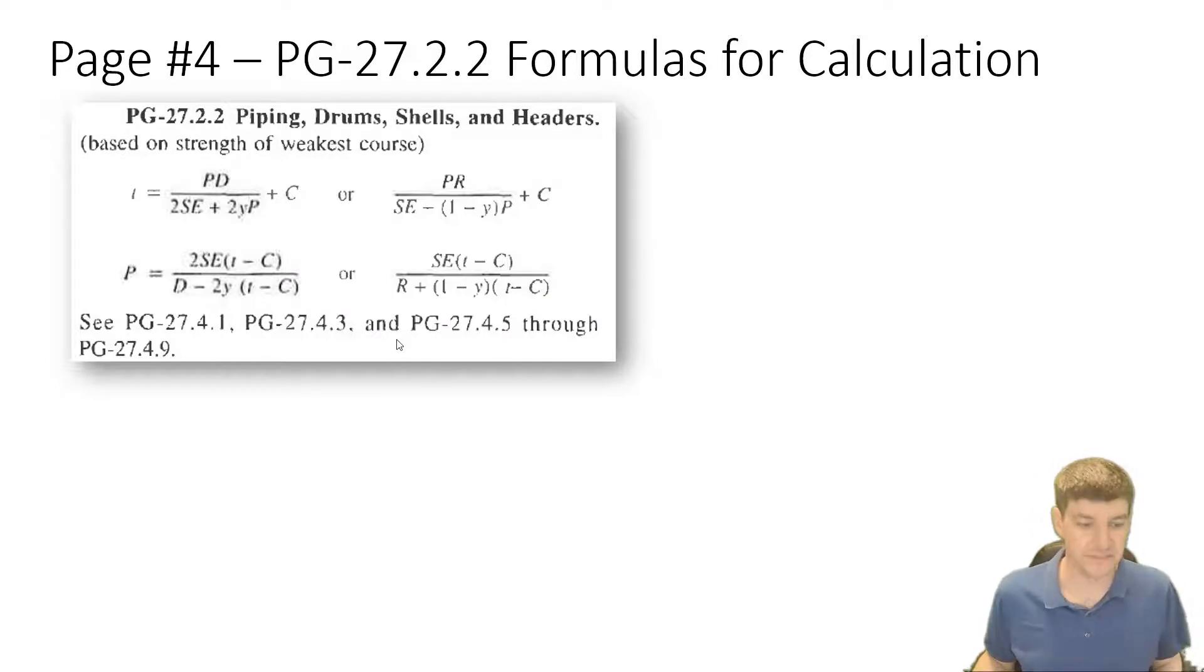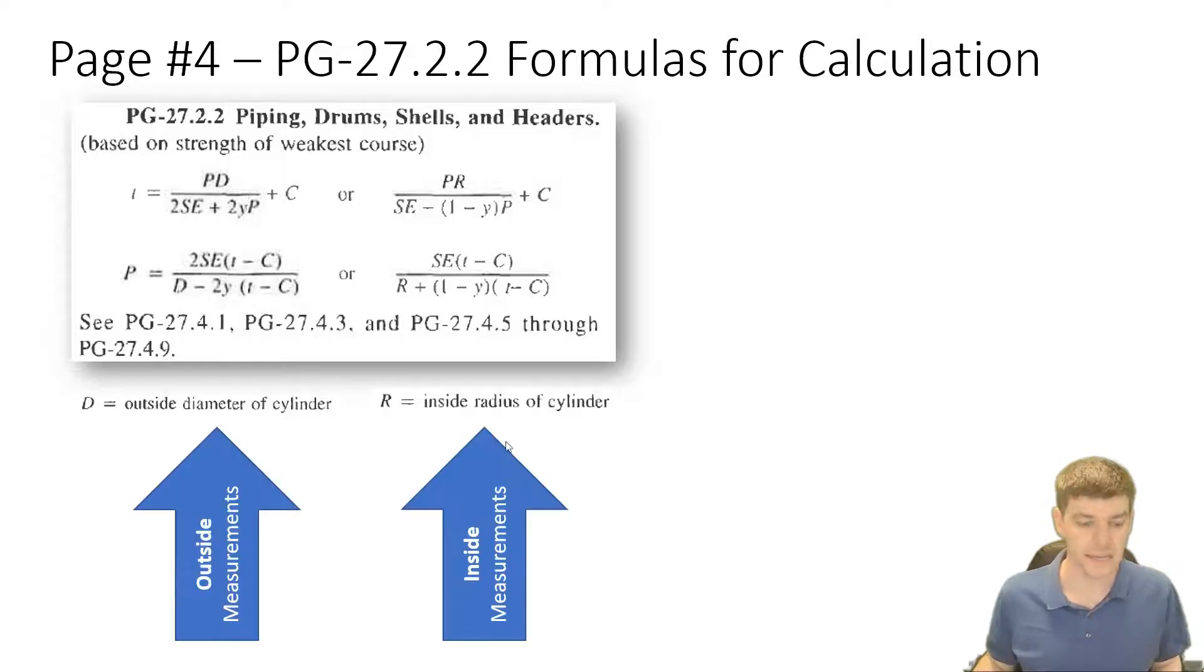So first of all, what we see is there's a difference between these, which is that the equations on the left hand side use capital D, and the equations on the right hand side use capital R. And if we go to our code and we looked up in our table of symbols, what we'd see is that D is our outside diameter of cylinder, and R is inside radius of cylinder. Now, the D and the R aren't important. What's important here is the inside and outside. So you have two sets of equations, and really the equations on the left side are really talking about outside measurements. The one on the right hand side is talking about inside measurements. Okay, and it's a really important distinction that we have two different sets of equations. You've got to be really careful here.